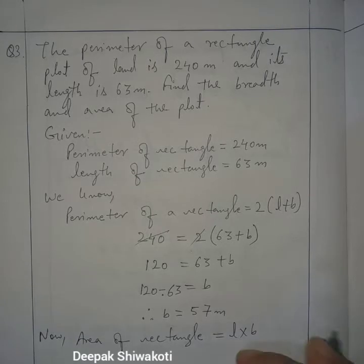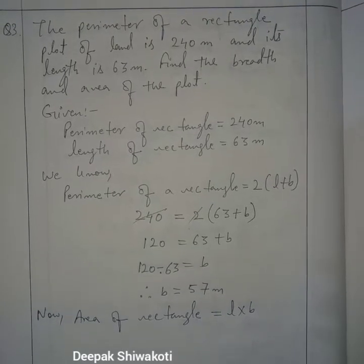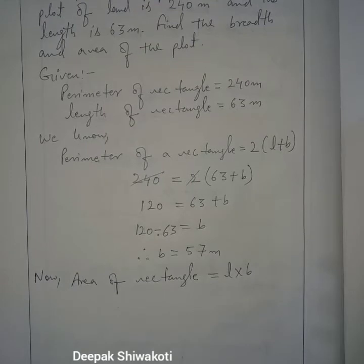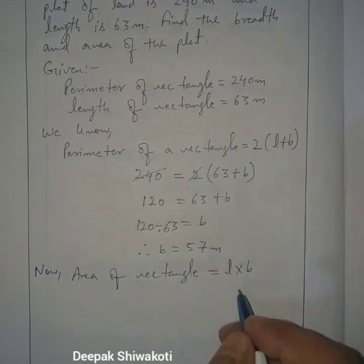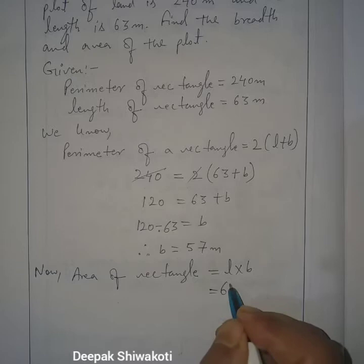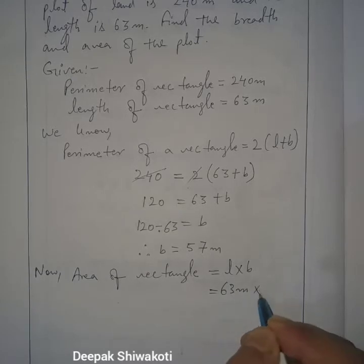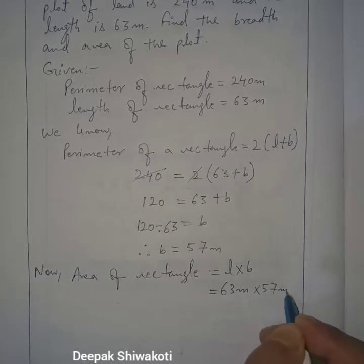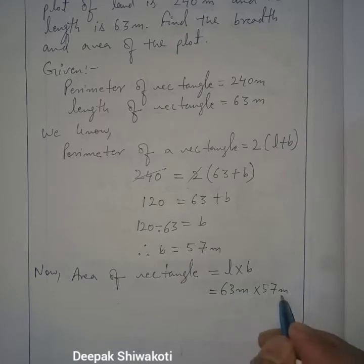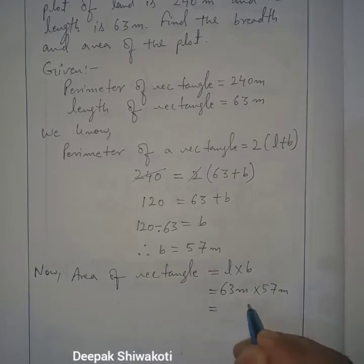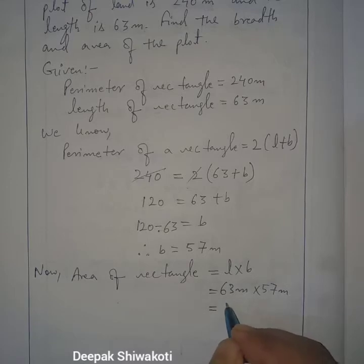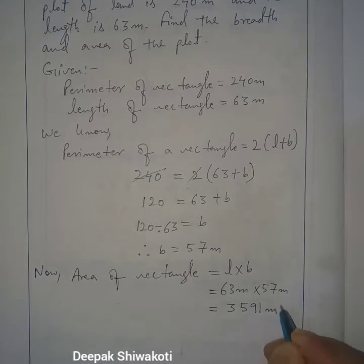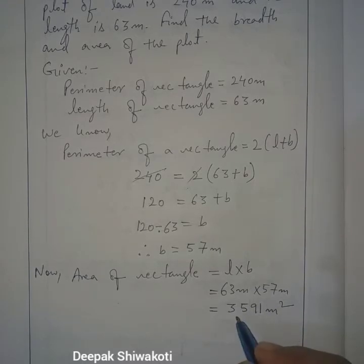Now we can find the area of the rectangle, which equals length into breadth. Length is given and breadth we have calculated as 57 meter. So 63 meter into 57 meter equals 3591 square meter. That is the area of the rectangular plot.